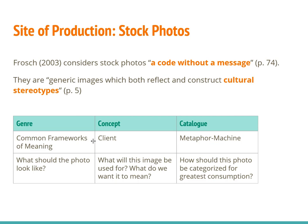Concept is thinking about how to sell it to a client. Photographers creating stock photos need to think about what the image might be used for, what it needs to mean, and how it can be vague enough so that it would be purchased in lots of different contexts by lots of different clients. The catalog, which Frosh refers to as the 'metaphor machine,' asks how the photo should be categorized for greatest consumption. A stock photo is generally listed with a large number of tags to help clients find photos, and looking at how the photos were cataloged can give us information about how and why they were produced.